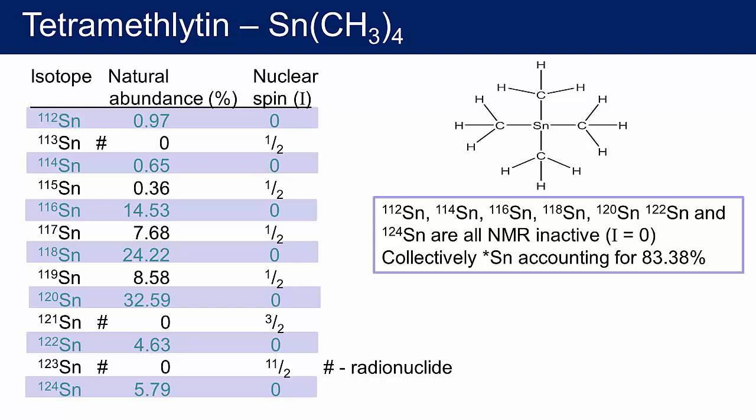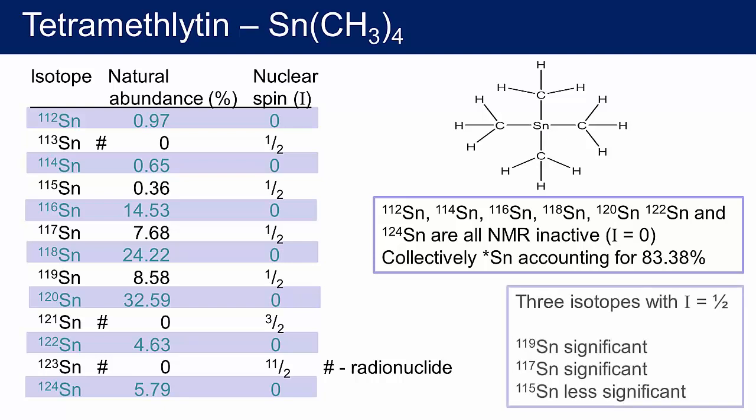Together, these spin-0 isotopes account for 83% of the tin nuclei. That leaves three isotopes each with a nuclear spin of one half. Tin-119 is the most abundant at 8.6%, but tin-117 is almost as important with 7.7% abundance. Tin-115 is present but much less significant, accounting for only 0.4% of all tin. So let's have a look at the proton NMR of tetramethyl tin.